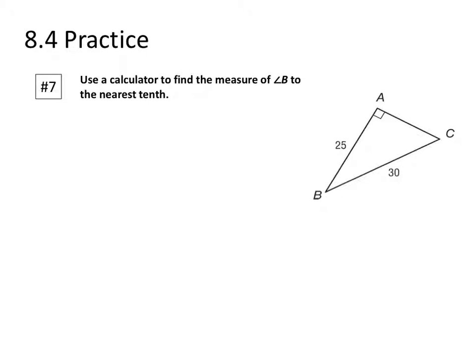So when we're finding measures of angles, we use the inverse functions. And let's take a look at what we have here. So we want to find angle B. So from the perspective of angle B, we know the hypotenuse and we know the adjacent.